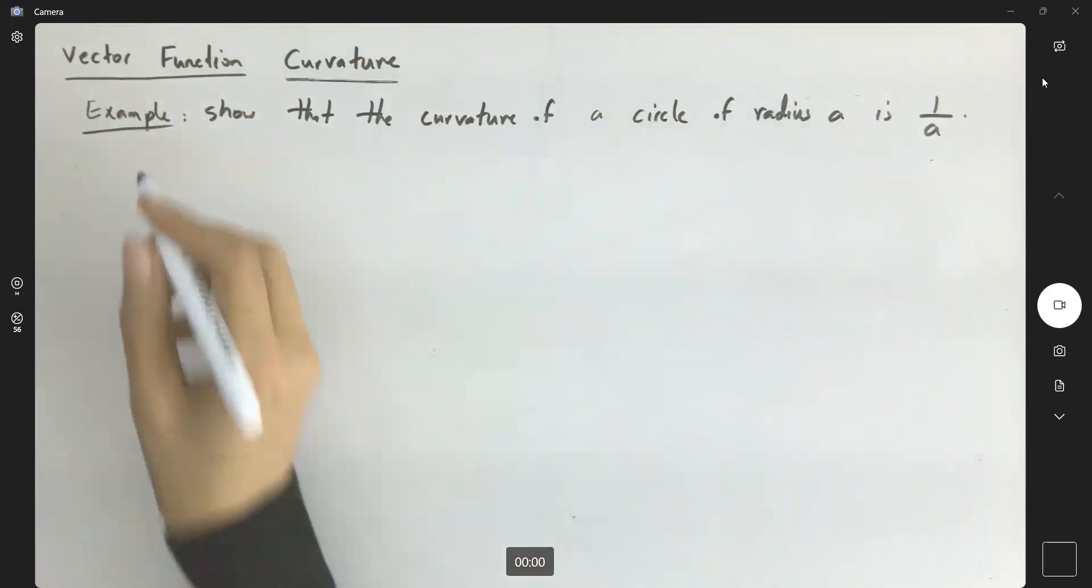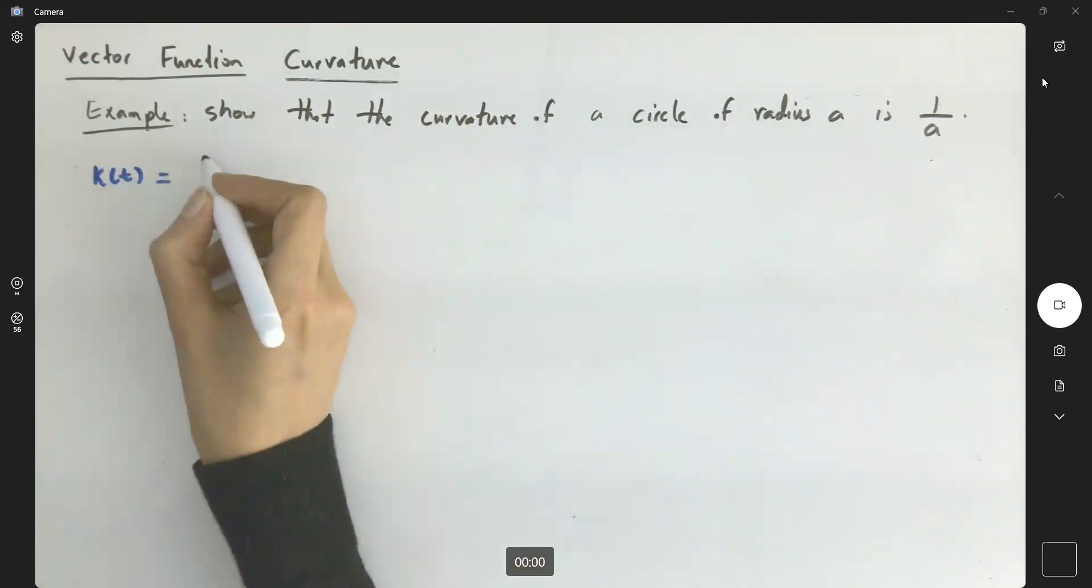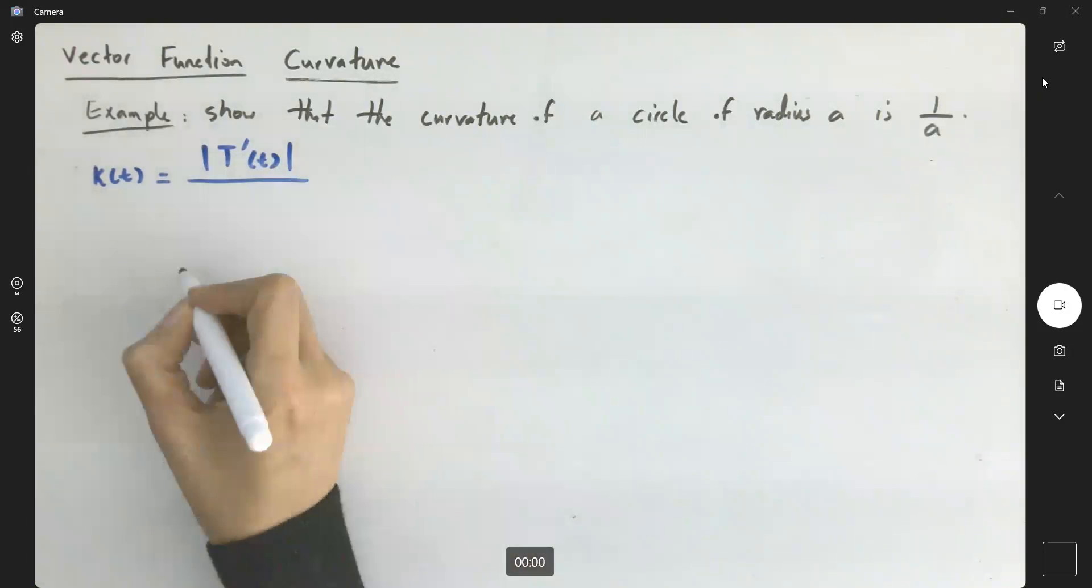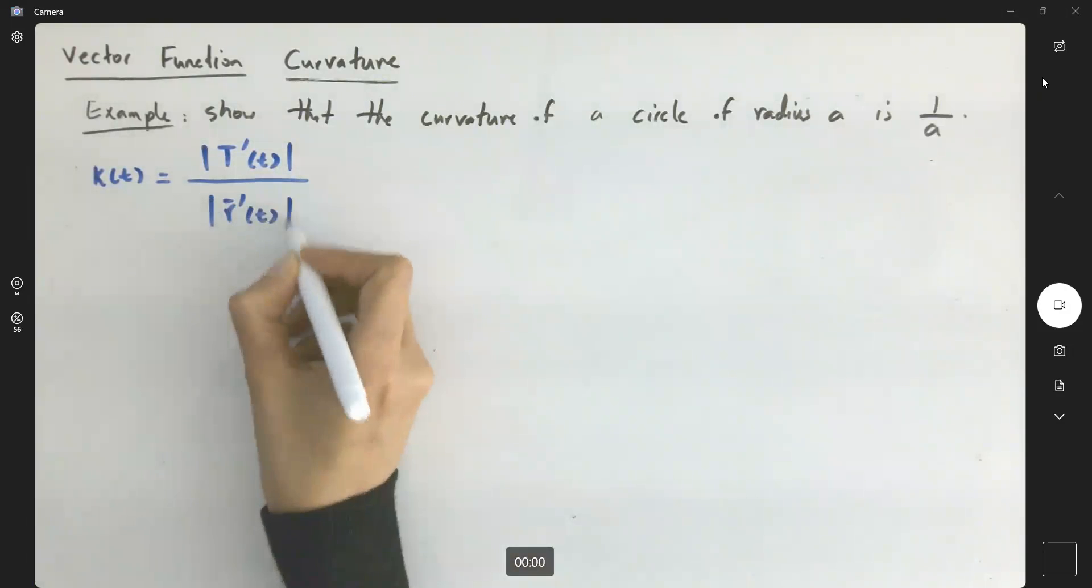Remember the formula for the curvature. Identify the correct formula. κ is equal to the magnitude of unit tangent vector derivative divided by the magnitude of R prime of T.